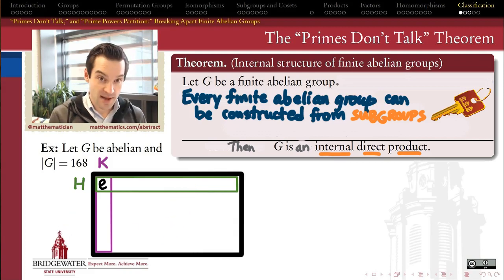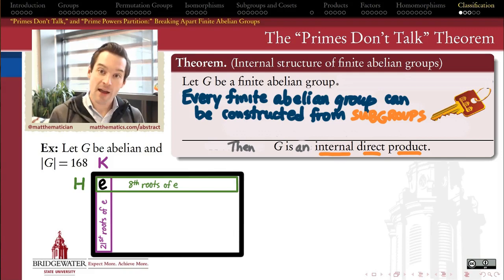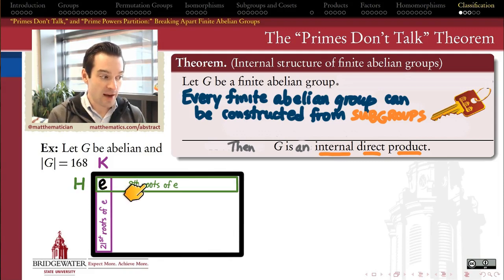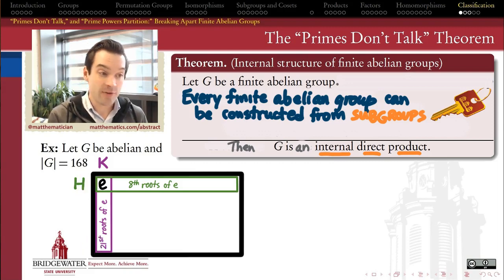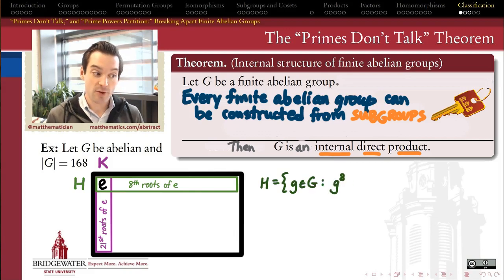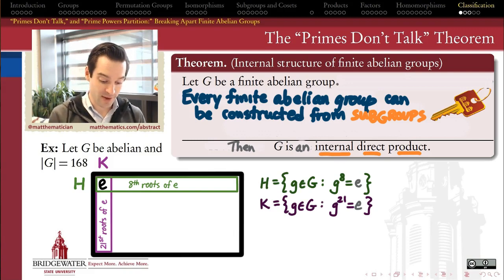Let's use the example of order 168 to fully understand the mechanism of this proof. I'm not going to write the full proof, but I'll work it out for this special case so you can see how to generalize it. I'm going to define H as the subset of all elements inside the group that are eighth roots of the identity — all elements whose eighth power equals E. Likewise, I'll define K as the set of all 21st roots of E — every element which, when raised to the 21st power, gives the identity. We'll have to show these are subgroups before going further.